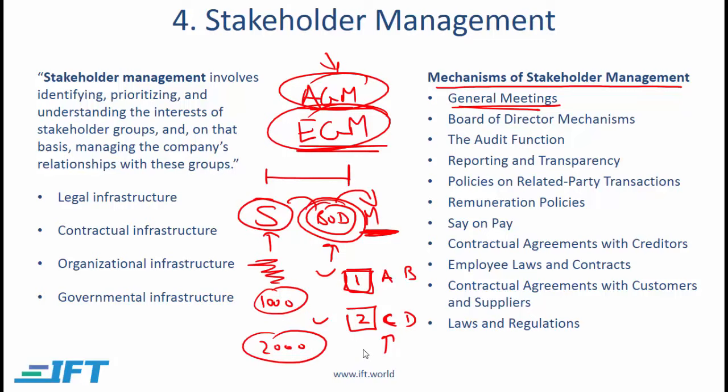Supermajority voting requirements — where two-thirds or 75% of votes are needed to pass a resolution — are also intended to help minority shareholders. With a supermajority requirement, it becomes harder for majority shareholders to push through corporate decisions at the expense of minority shareholders.